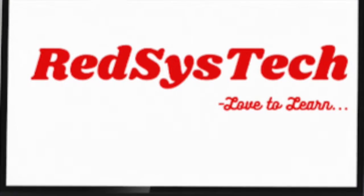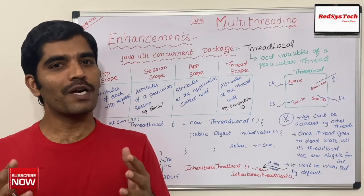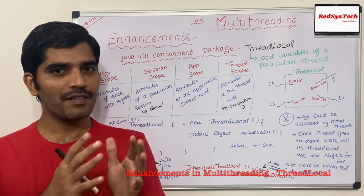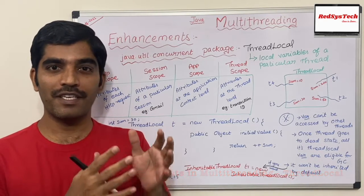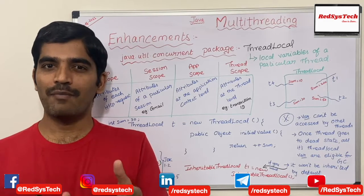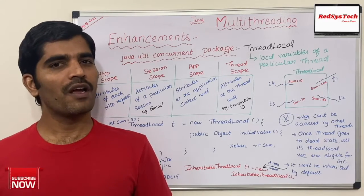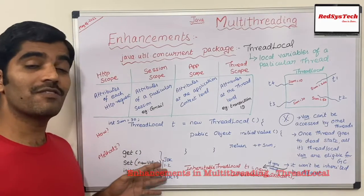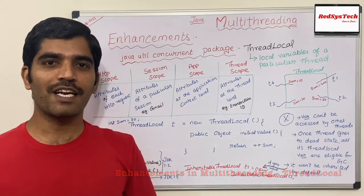In this video we are going to learn about what is ThreadLocal. ThreadLocal is nothing but the scope of a particular thread. I am going to explain thread scope with the help of other analogies — HTTP scope, session scope, application scope, and thread scope — so you can easily capture what thread scope means. I will also show how to create a ThreadLocal, use its methods, and how it works in real-time programming. So without any further delay, let's get started.